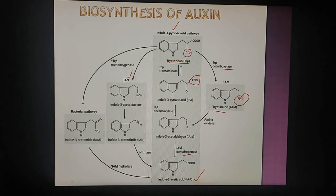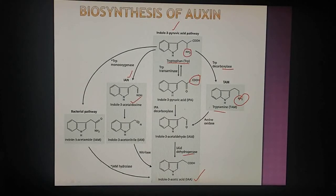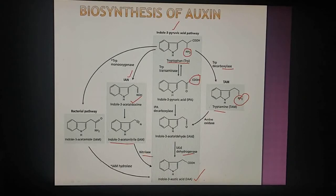The next pathway is the IAN pathway. In this pathway, indole-3-pyruvic acid is converted to indole-3-acid aldoxime, then to indole-3-acetonitrile, which in the presence of nitrilase finally produces indole-3-acetic acid. The IAN pathway is mainly found in three families: Poaceae, Brassicaceae, and Musaceae.